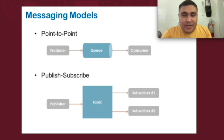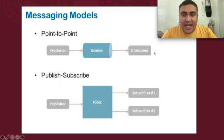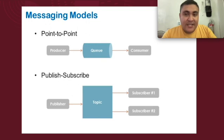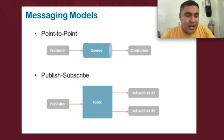We have two messaging models: the point-to-point model we just discussed, and the publish and subscribe model. In point-to-point, you have the producer, the queue as the middleware, and the consumer. The benefit here is that the consumer does not need to be online all the time to receive data from the producer, because the middleware queue acts as temporary shelter for the data before it is submitted to the consumer.